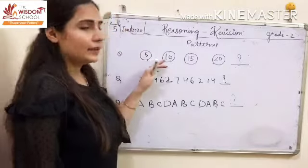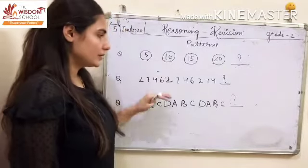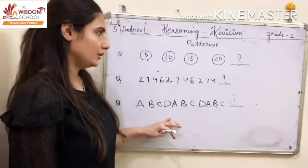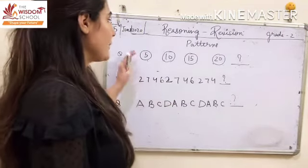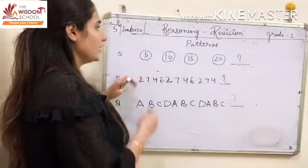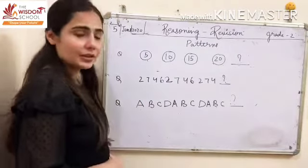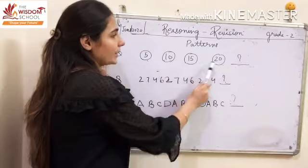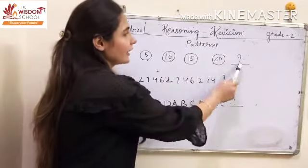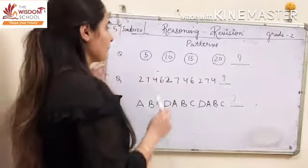We have two questions from patterns in numbers, and this is the question of patterns in alphabet. Patterns in numbers — first question here. You will firstly observe what pattern is following, then you will find the missing number.